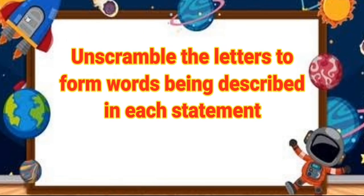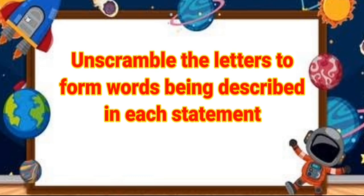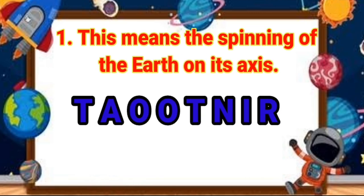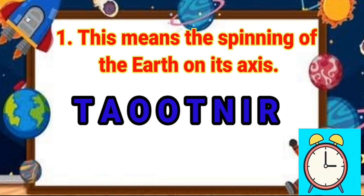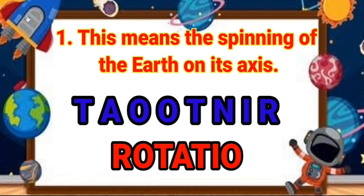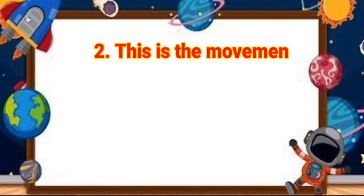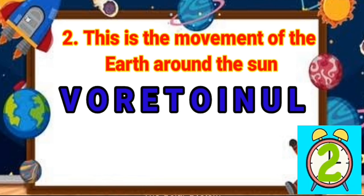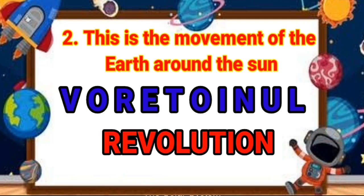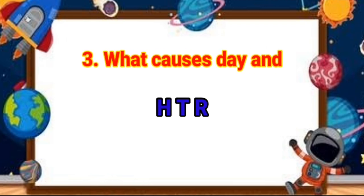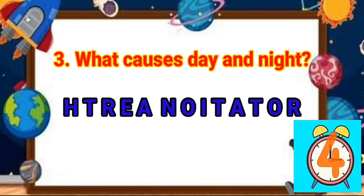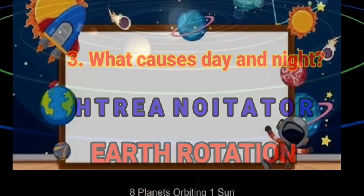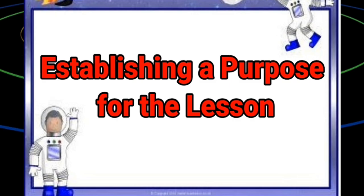Before we start our new lesson, let's review our previous lesson. Have your pen and paper ready — I'll scramble the letters to form words described in each statement. Question number one: this means the spinning of the Earth on its axis. Rotation! Correct. Number two: this is the movement of the Earth around the Sun. Revolution! You guessed it right. Number three: what causes day and night? Earth's rotation — you got it right!